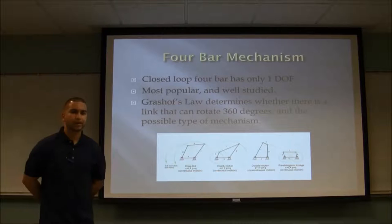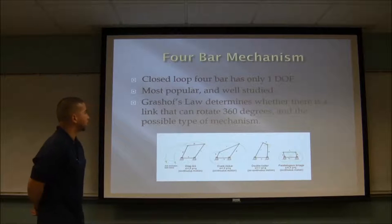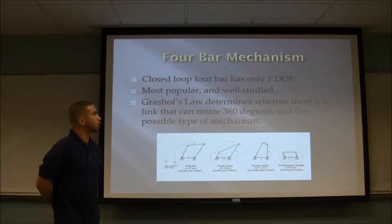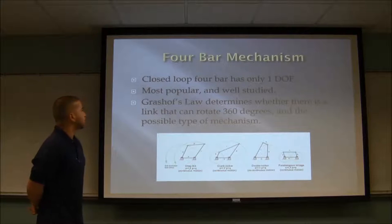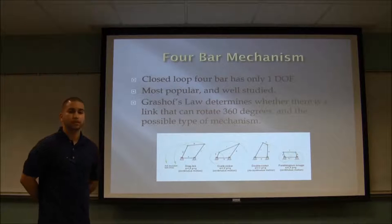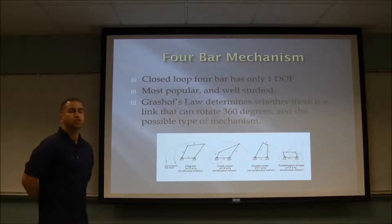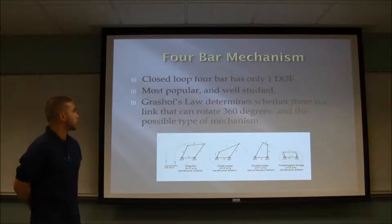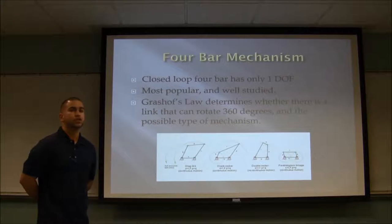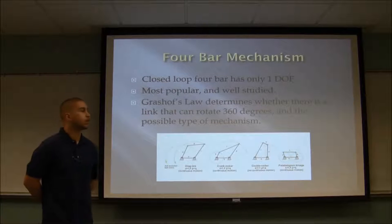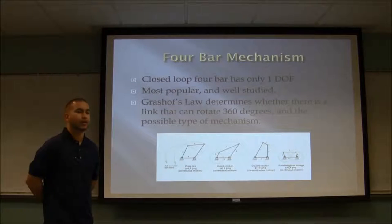A four bar mechanism is the most common type of mechanism. It is a closed loop of four bars with only one degree of freedom. The most popular and well-studied type of mechanism is a four bar mechanism. Grashof's law determines whether there is a link that can rotate 360 degrees and the possible type of mechanism.